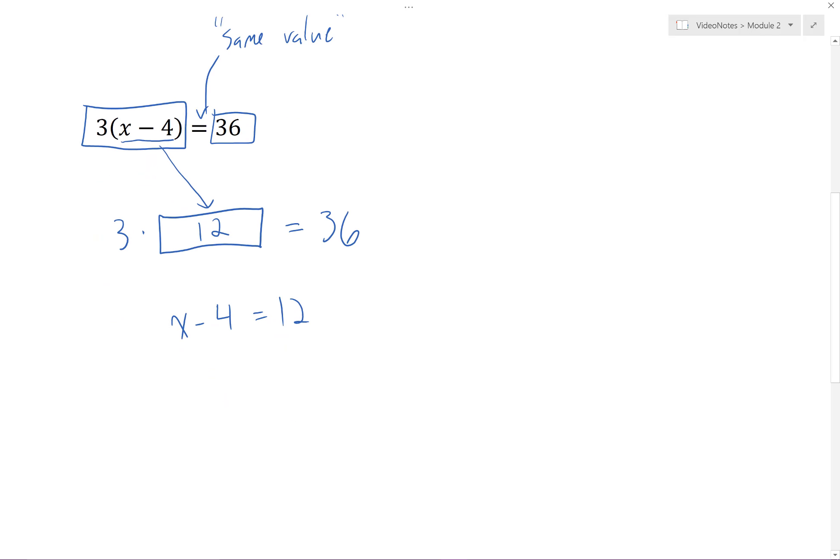We can think of this equation as some number minus 4 has a value of 12. What number minus 4 is equal to 12? We know that this number has to be 16. Therefore x must be equal to 16.